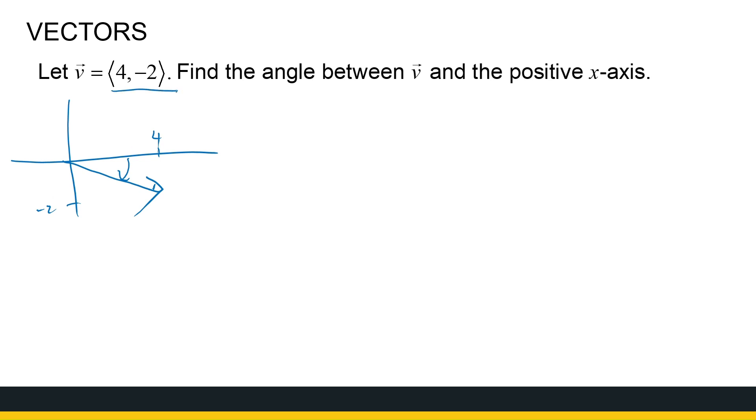So, what do I know? I've got 4 minus 2. So, I know 4 minus 2 is the same as a cos theta, a sin theta. Now, what is a? A was the magnitude of the vector. So, the magnitude of v is the root of 16 plus 4. So, that's the square root of 20. So, I know 4 is root 20 cos theta, and minus 2 is root 20 sin theta.